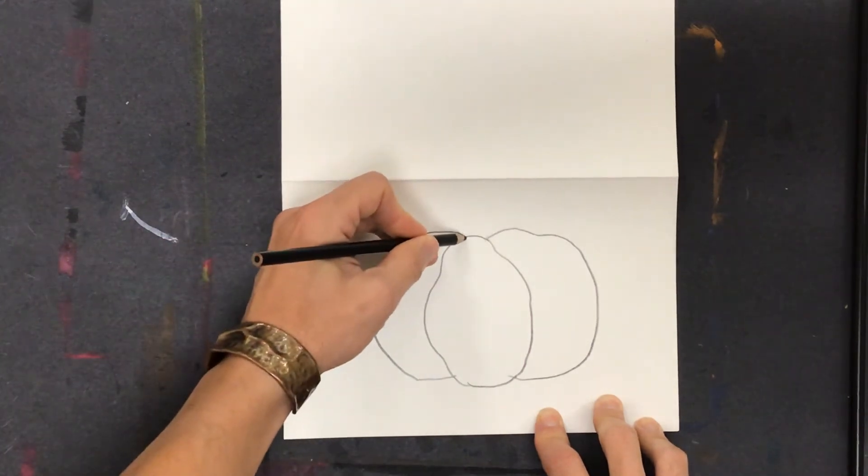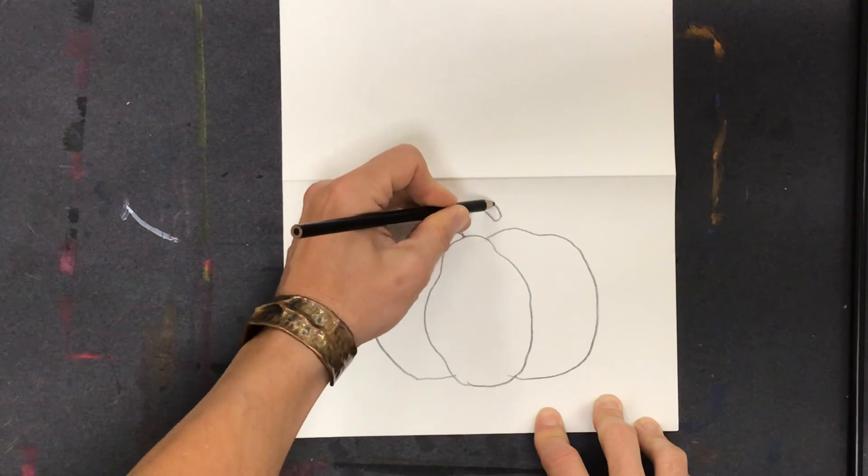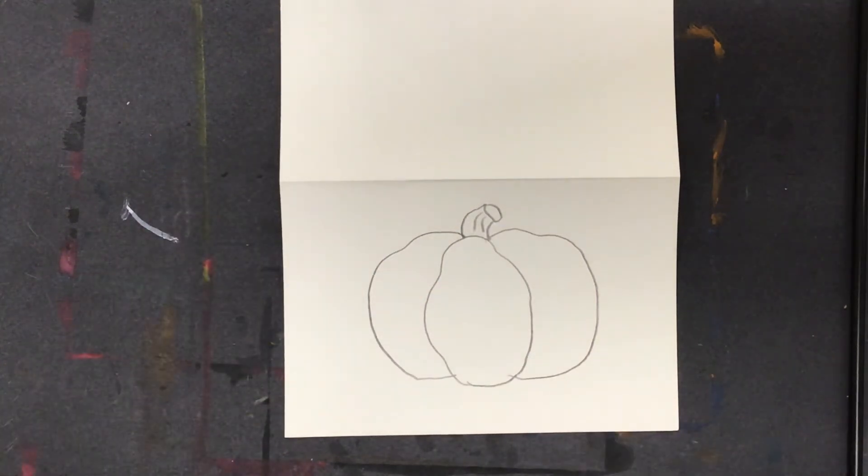Then you can actually put the stem on it. Maybe put some lines on there. All right, so you're going to start with that one.